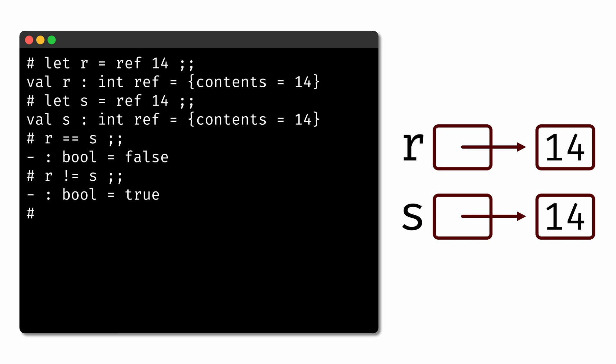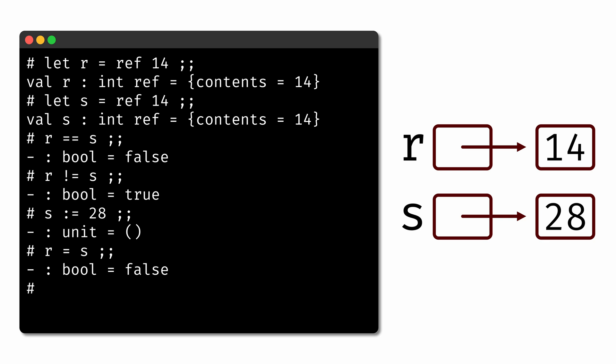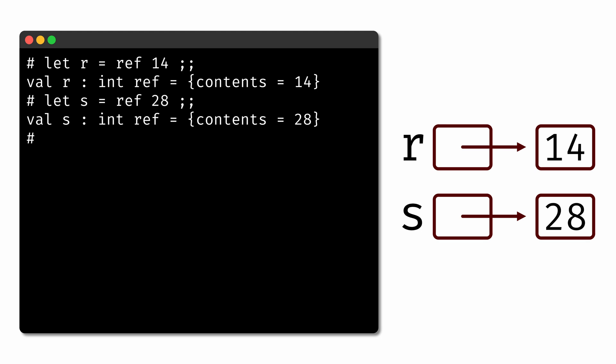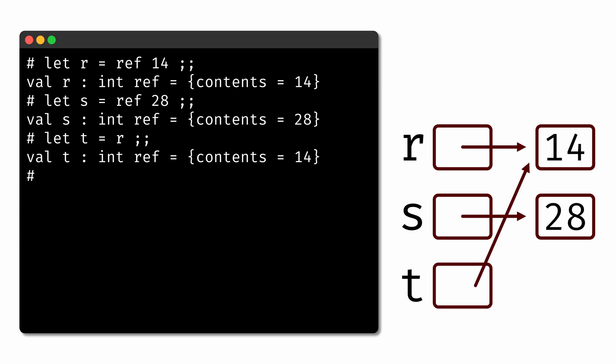If we were to update one of these two variables — for example, by updating s to be the value 28 — that only changes the memory pointed to by s; it doesn't affect the memory pointed to by r. Now r and s are neither structurally nor physically equal. But it is possible for two variables to both be references to the same physical block of memory. For example, if we had a variable t and set it equal to r, now both t and r are references to the same block of memory. If we later update r to be the value 51, that changes the block of memory, so now t and r are both references to the value 51.